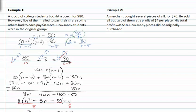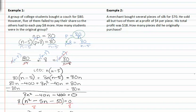In example two, a merchant bought several pieces of silk for seventy dollars, so the number of pieces of silk for a certain price equals seventy dollars. He sold all but two of them, so n minus two, at a profit of four dollars.